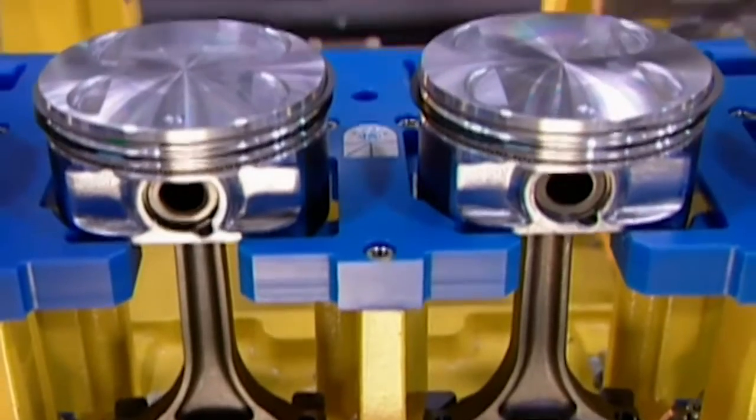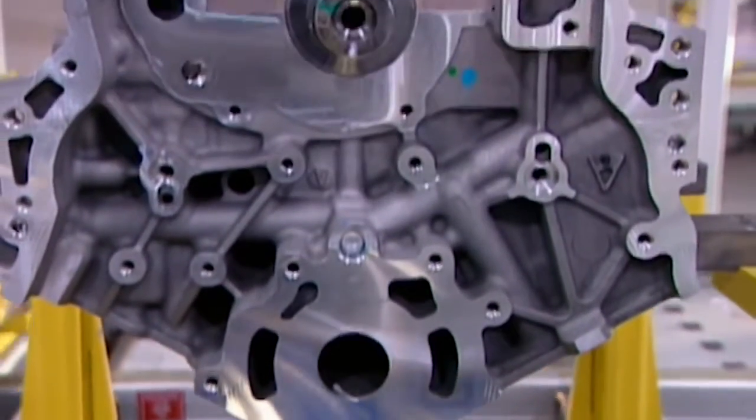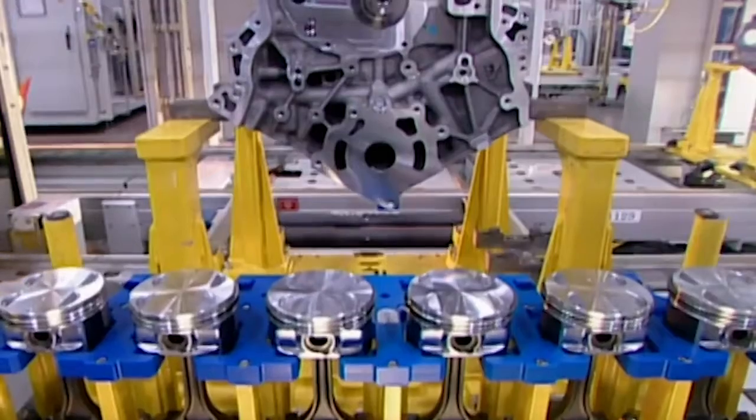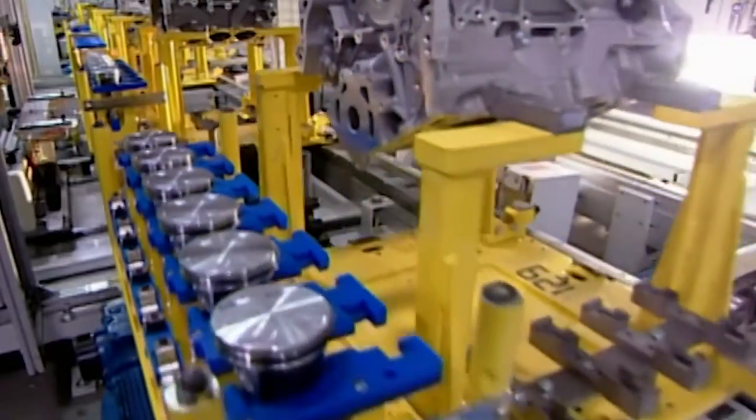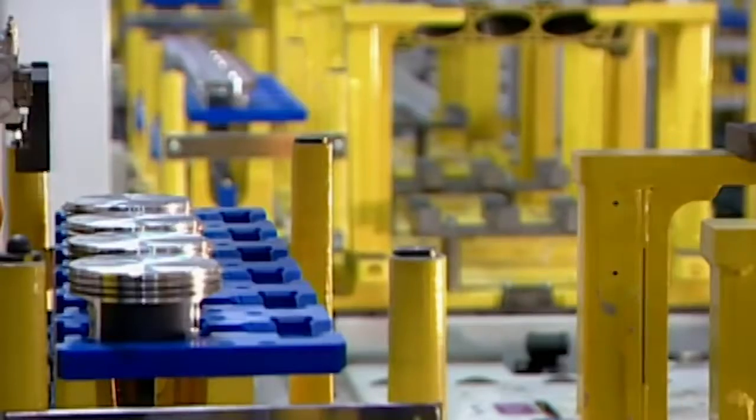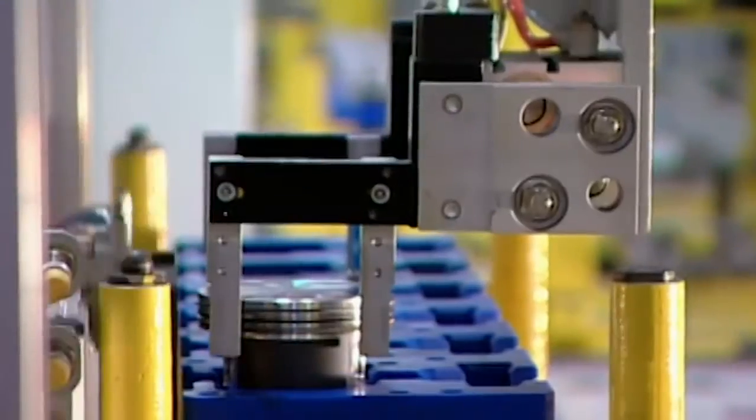The pistons come next—six, because these are six-cylinder engines. The pistons are made of aluminum. Robots install them into the cylinder bores of the engine block. A steel connecting rod attaches each piston to the crankshaft.